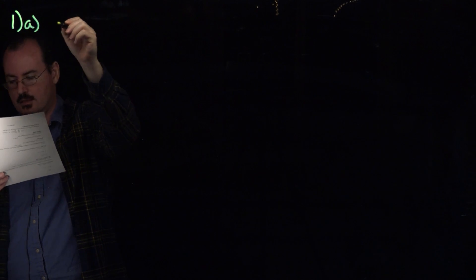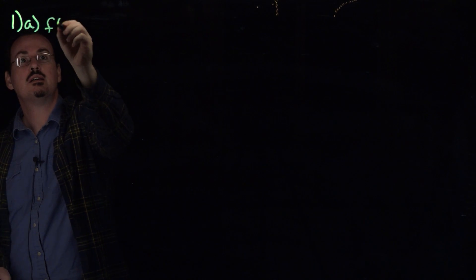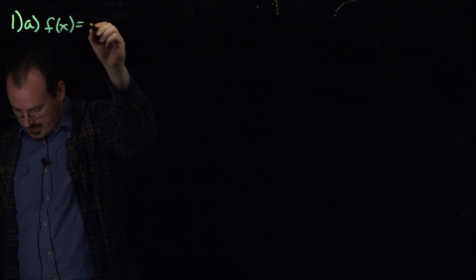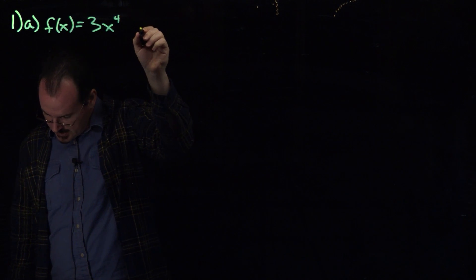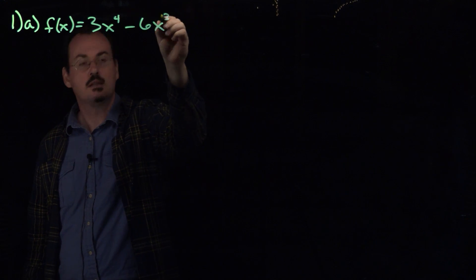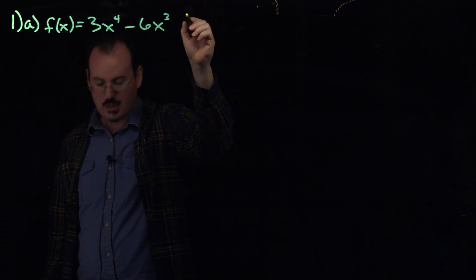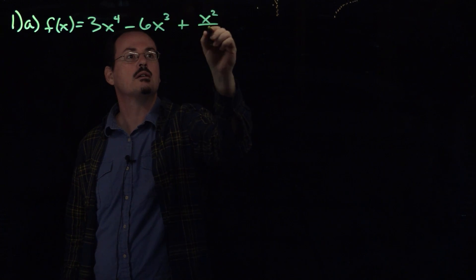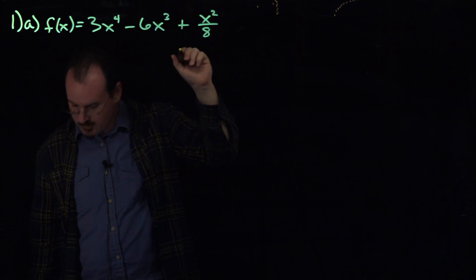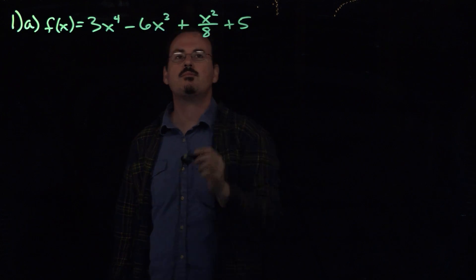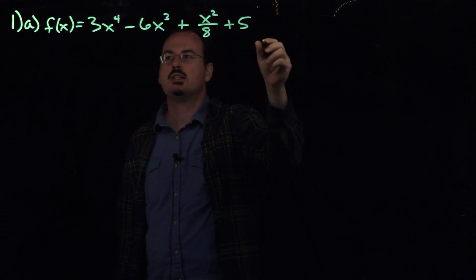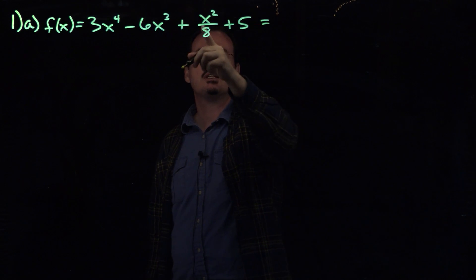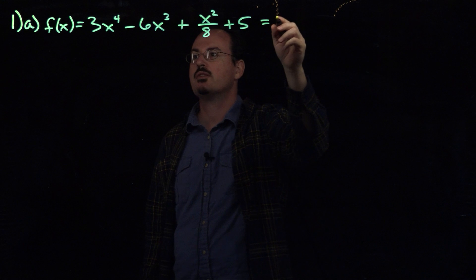So we've got 1a. The function given is f of x equals 3x to the fourth power minus 6x to the third, x squared over 8, and plus 5. Right away, the best thing to do when we've got just a number in the denominator is to rewrite the function so that that number becomes just a coefficient in front of the x term.